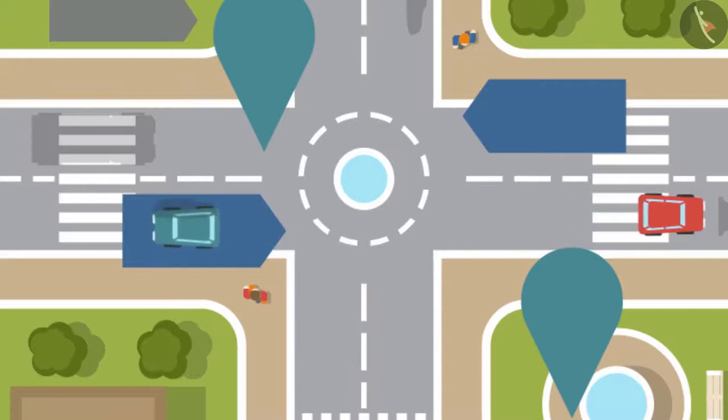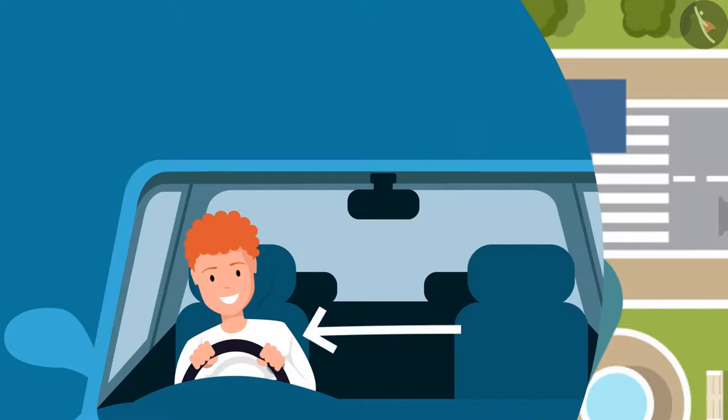When the car takes a sharp turn, our bodies tend to move to the opposite side of the turn due to the inertia of motion.